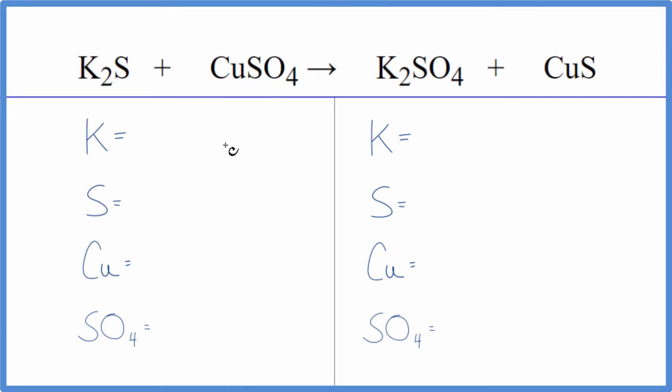So let's count the atoms up and balance the equation. We have two potassium atoms, one sulfur, one copper, and then we have this sulfate here. It stays together. We have it here and here.